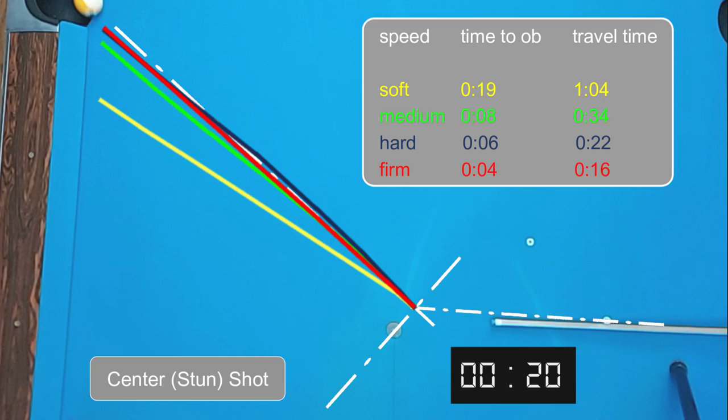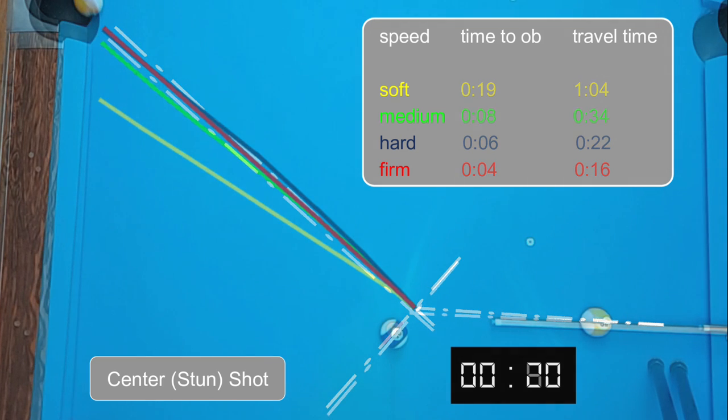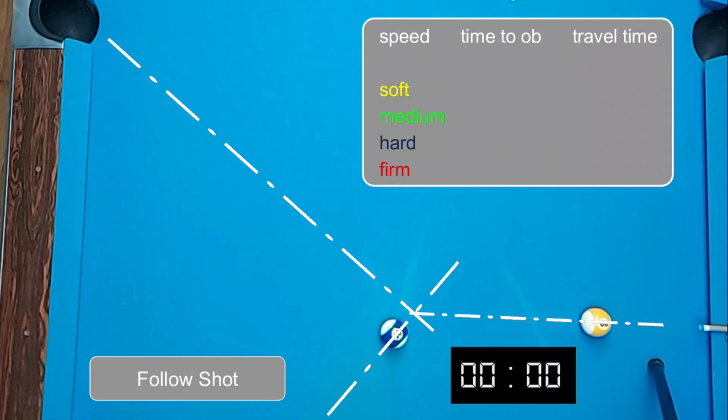But that change in direction happened only after the cue ball traveled some distance along the tangent line. If I'm right, we should see a similar effect with a more pronounced change in direction for the shots that are struck with a high cue ball.